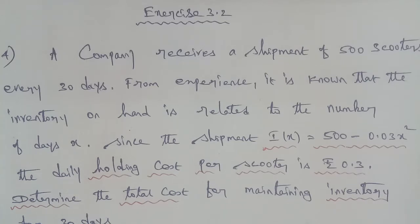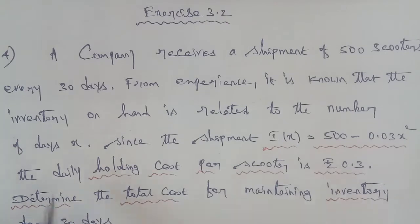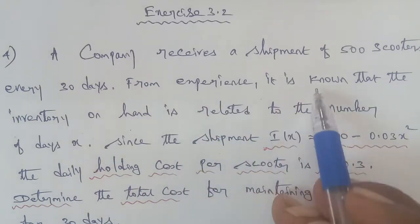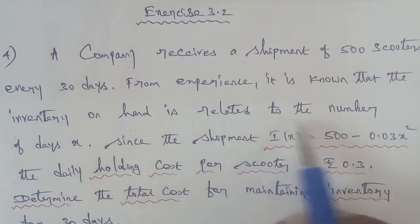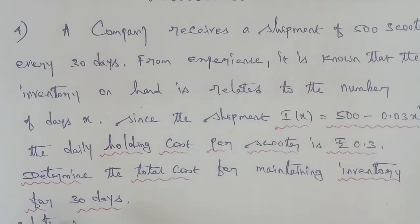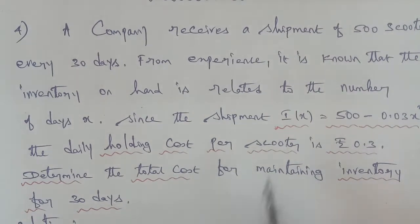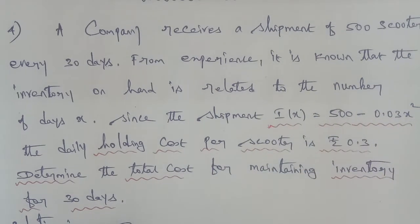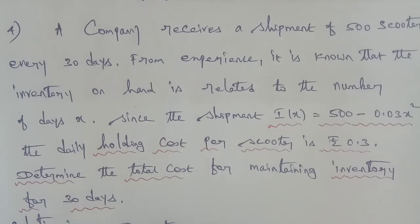Hi students, 12th Business Maths, Exercise 3.2, Question Number 4. A company receives a shipment of 500 scooters every 30 days. From experience, it is known that the inventory on hand is related to the number of days X since the shipment. I(X) = 500 - 0.03X². The daily holding cost per scooter is rupees 0.3. Determine the total cost for maintaining inventory for 30 days.